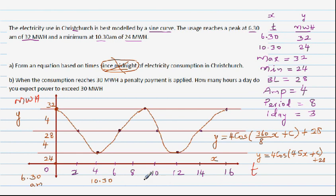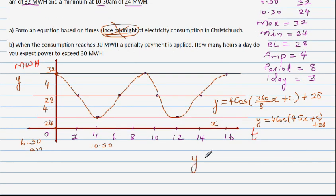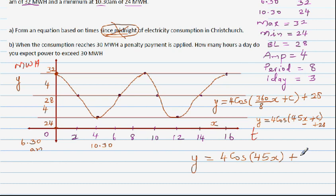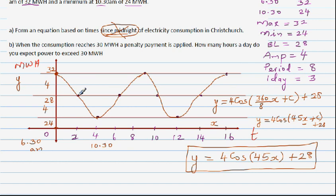If the starting point is set as x = 0 at the peak, then 45 × 0 = 0, so c becomes 0 — there is no phase shift. The equation simplifies to y = 4cos(45x) + 28. If we started from midnight instead, there would be a phase shift and c would have a non-zero value.